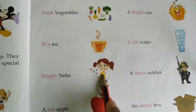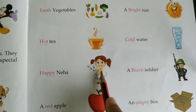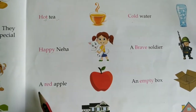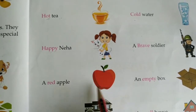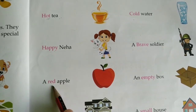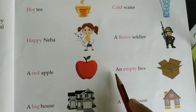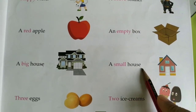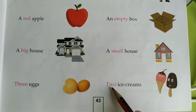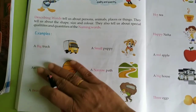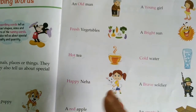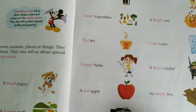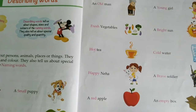Happy Neha — look at her, she is so happy, smiling. She is happy with a pet. A brave soldier — what type of soldier? He is very brave. A red apple — apple is a noun, and it can also be a sweet apple. An empty box, a big house, a small house, three eggs, two ice creams. Just read these words and you will come to know the differences between describing words and naming words. In the next video, we will do some written exercise. Till then, children, take care. Bye.